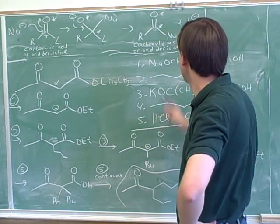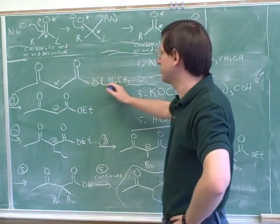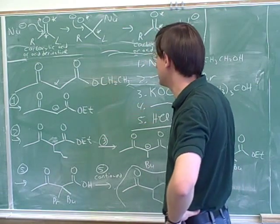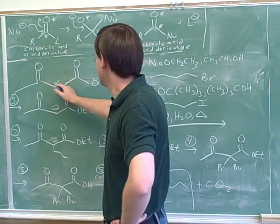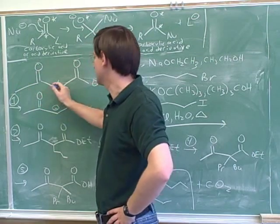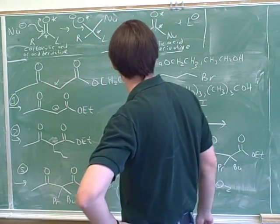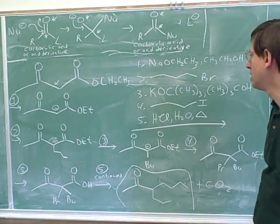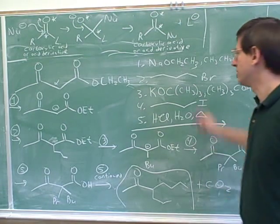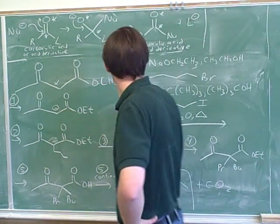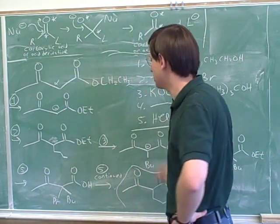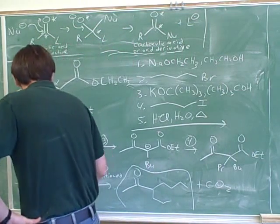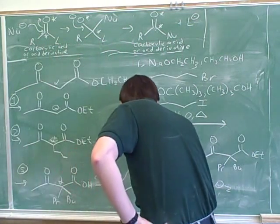We started by using a base — notice that we used a base that was similar to the leaving group, so we didn't need to worry about nucleophilic competition. That made the enolate on this alpha carbon, not this alpha carbon, because this one is more stabilized by resonance. In step two, an SN2 reaction occurred — the enolate attacks in an SN2. It's helpful to keep labeling our alpha carbon.